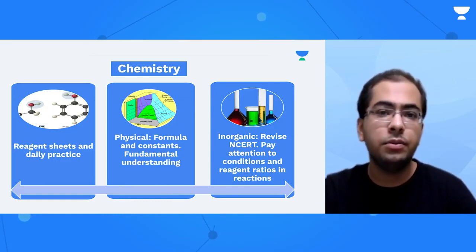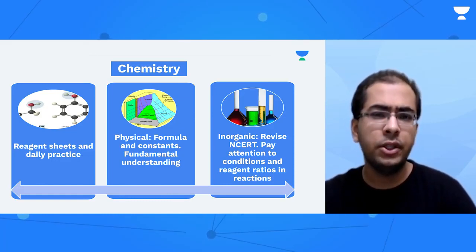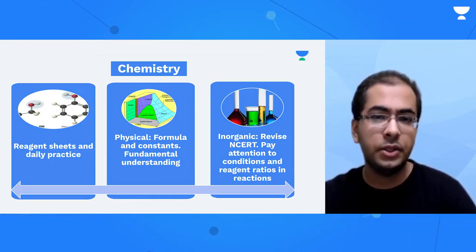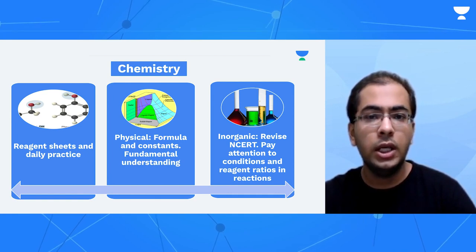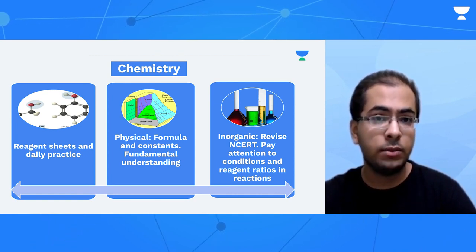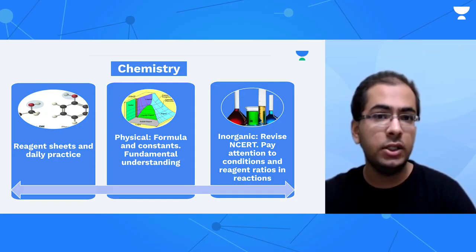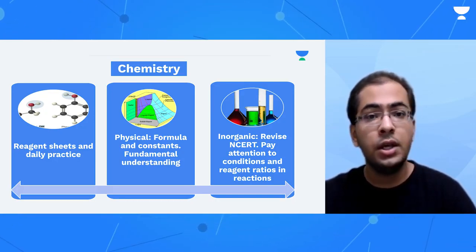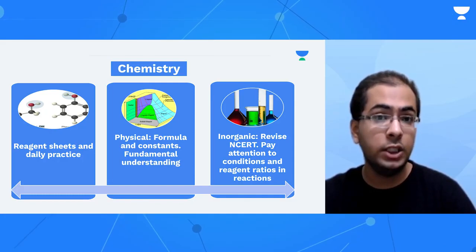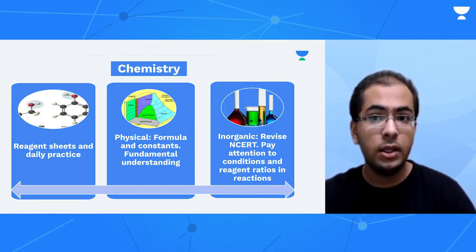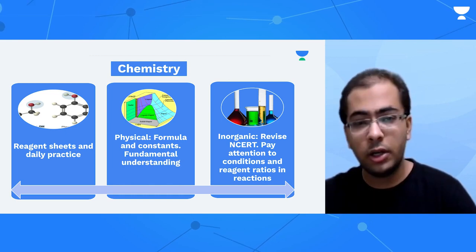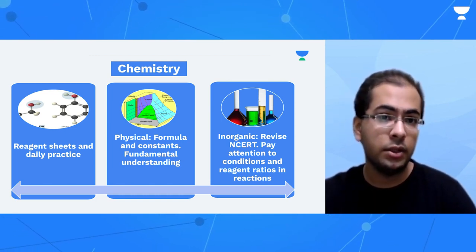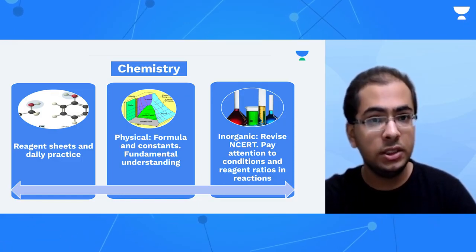Because you don't want to mess up in those chain reaction questions where they just, you have like a bunch of reagents and you don't know what the final product is. So if you get confused as to what the next product is, what the next product in the sequence is, you'll have no idea what the next reagents are. But if you're sure that I've only seen this reagent in one chapter and that is aldehyde and ketones, so the previous product must be an aldehyde or a ketone. And that way you'll be able to navigate those questions quicker than others. So yeah, reagent sheets chapter wise and daily practice problems for organic.